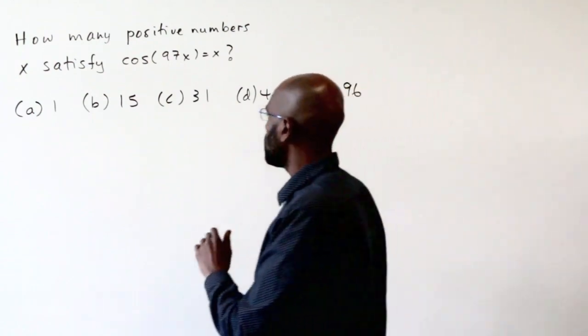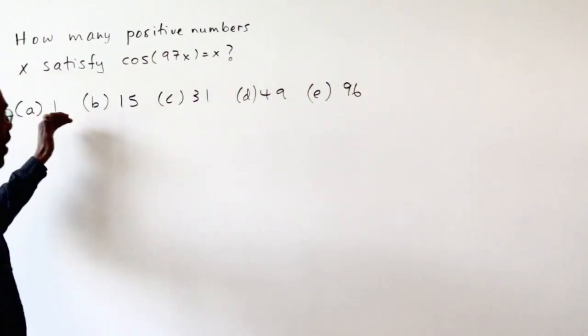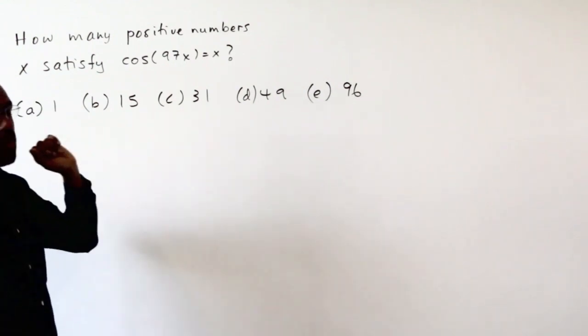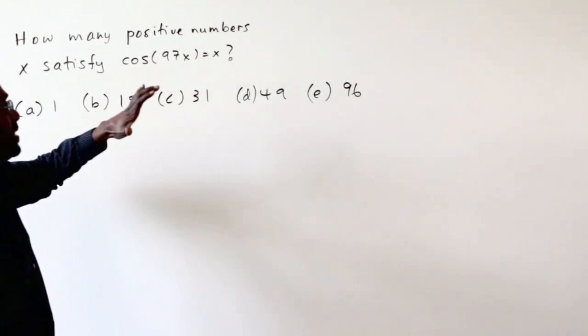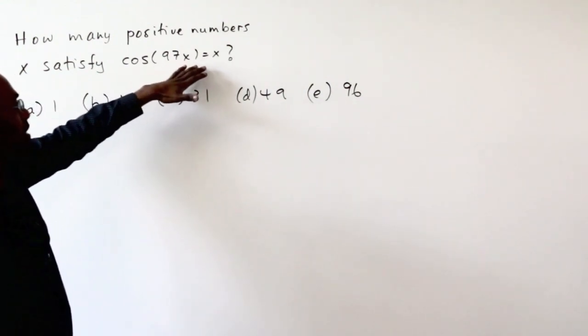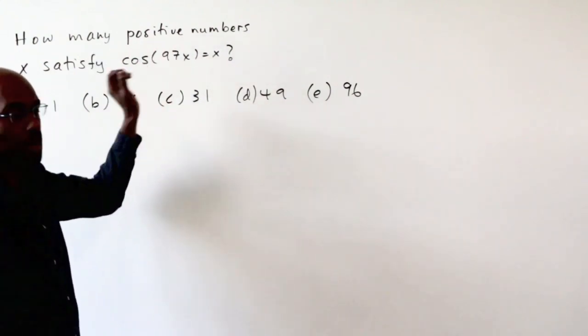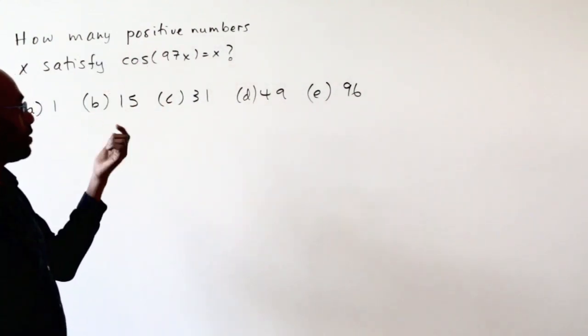So one of the things I want to observe about the answers is they're quite spread apart. So what we can do is get an idea of how many solutions there are, but not exactly how many solutions there are, like a good estimate,